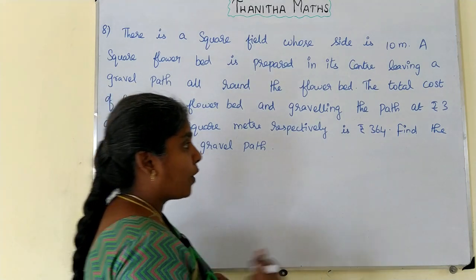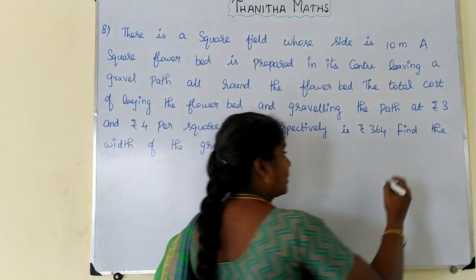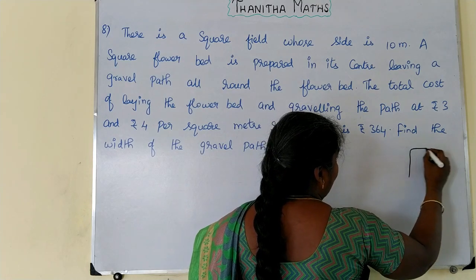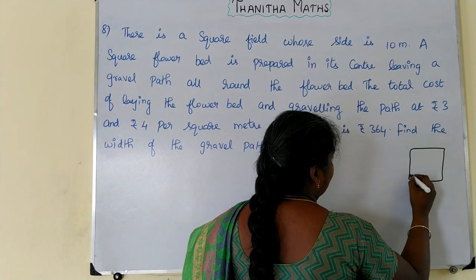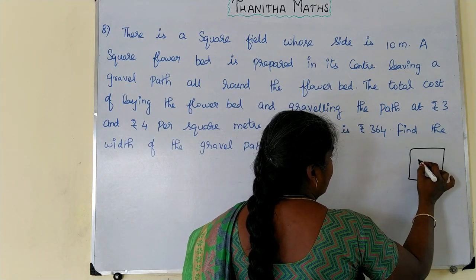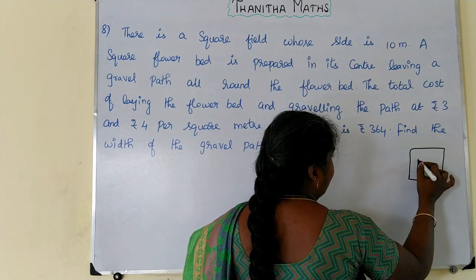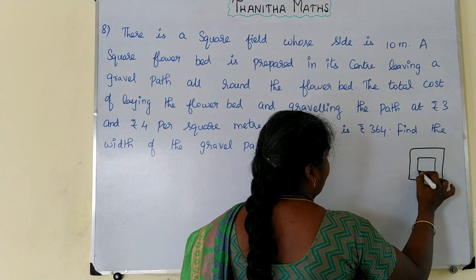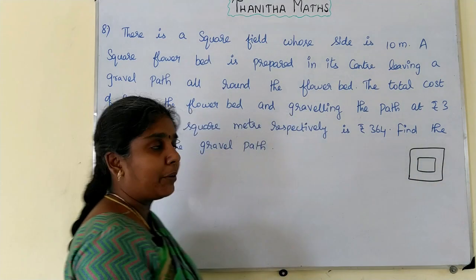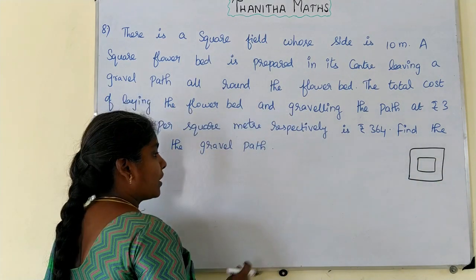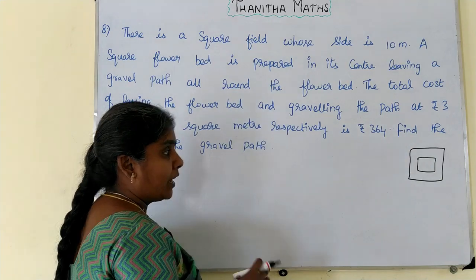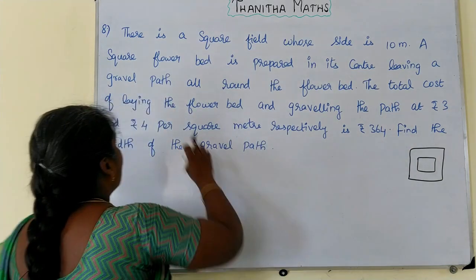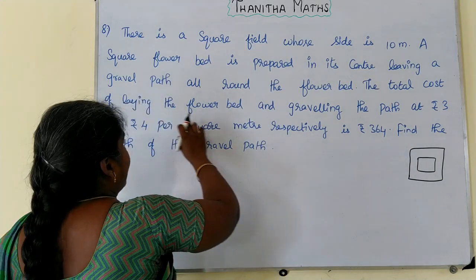The field is a square shape. Inside the square-shaped field, there is a square-shaped flower bed.